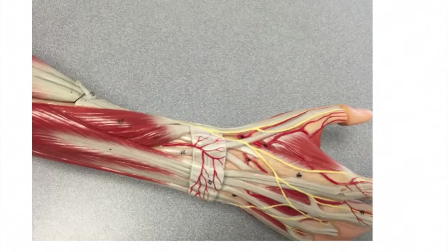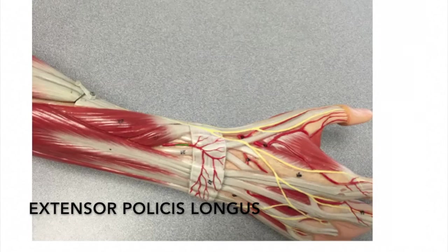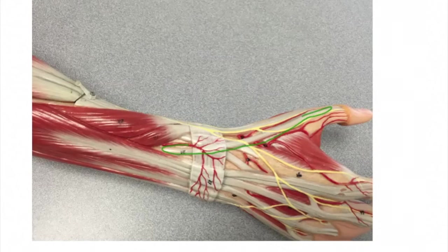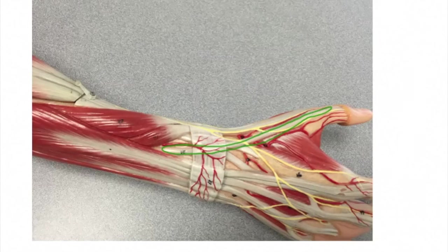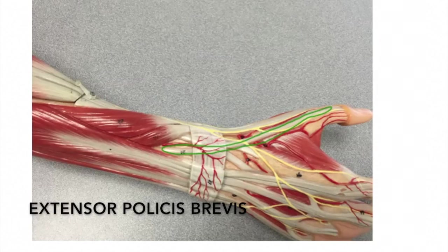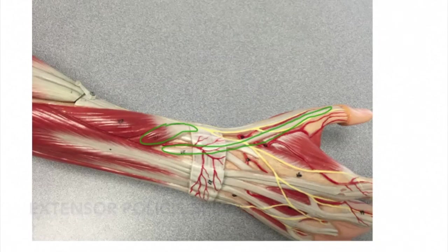Now we are going to look at the muscles that extend and abduct the thumb. Here we see the extensor carpi radialis longus, but only the tendon. The origin is the ulna and radius, the insertion is the distal phalanx of the thumb, and the action is to extend the thumb. Next we see the extensor pollicis brevis: the origin is the radius, the insertion is the proximal phalanx of the thumb, and the action is to extend the thumb.